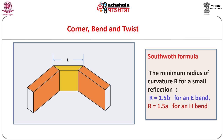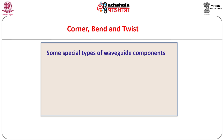A formula given by Southworth is highly useful to minimize such reflections — it gives the minimum radius of curvature R for a given small reflection as shown. One must appreciate the brain work behind the derivations of such formulae. We have to discuss some special types of waveguide components like directional couplers, circulators and isolators. However, due to time limitations, let us discuss about them in the next module.